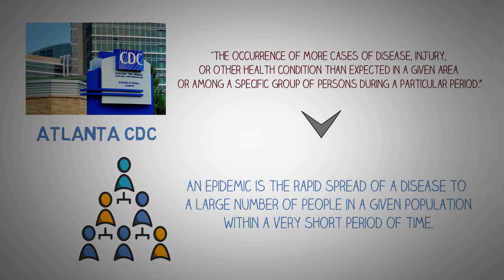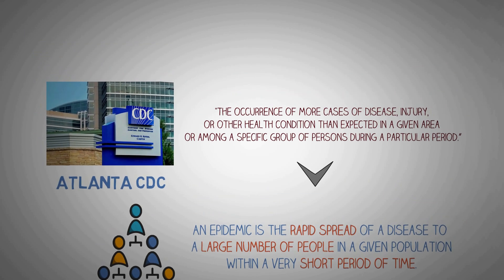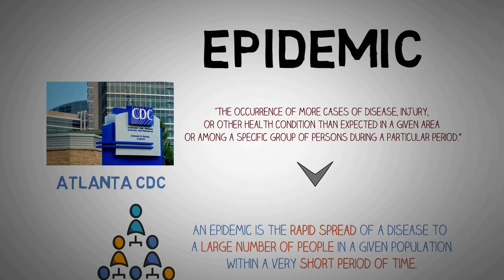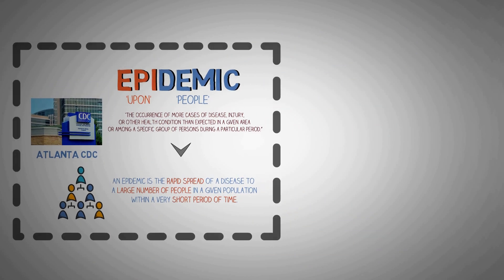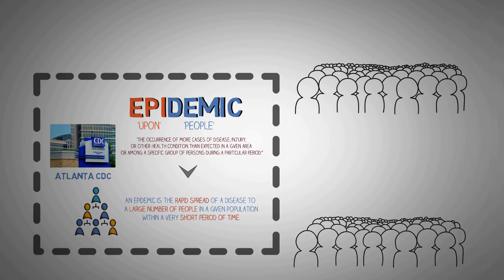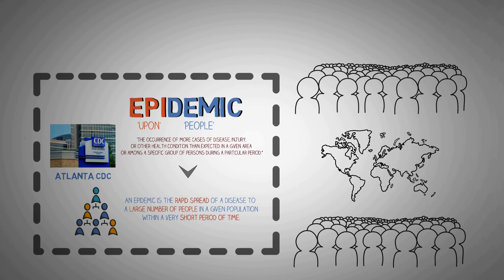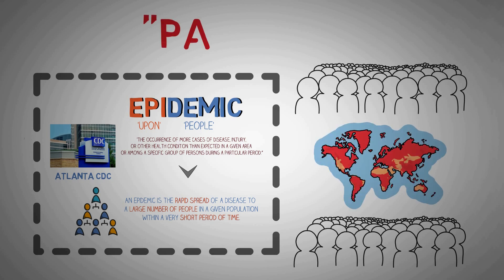The important points to pay attention to in this definition are: rapidly spreading disease, which involves a large number of people, and in a short period of time. The word itself traces its origin from Greek words 'epi', meaning upon, and 'demic', which comes from the word 'demos', meaning people. When an epidemic has spread across a large region, e.g. multiple continents, it is called a pandemic.